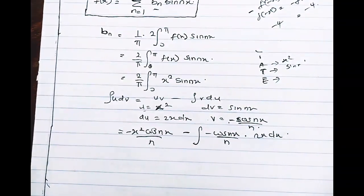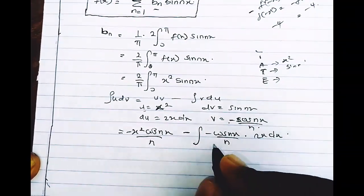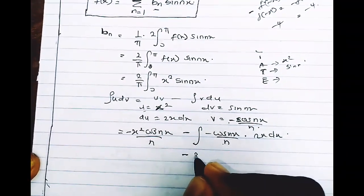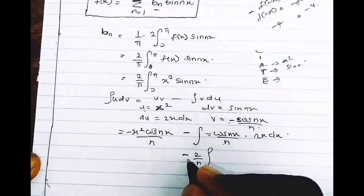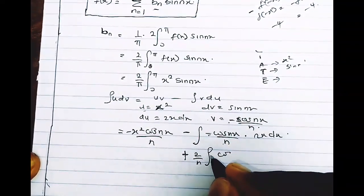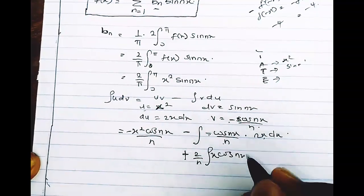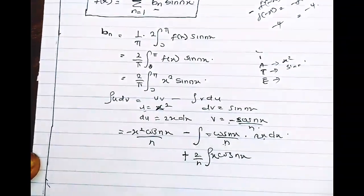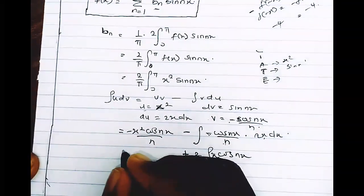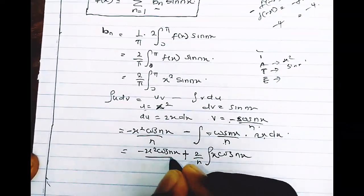Taking the constants out of the integral, this becomes −x²cos(nx)/n + (2/n)∫x·cos(nx) dx. The minus and minus make a plus, so we are left with −x²cos(nx)/n plus (2/n) times the integral of x·cos(nx) dx.